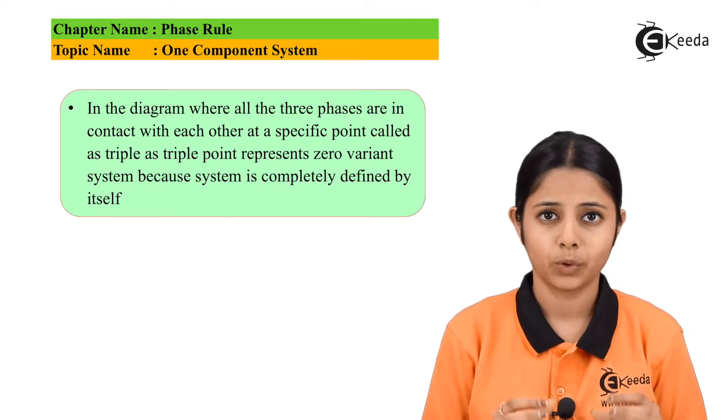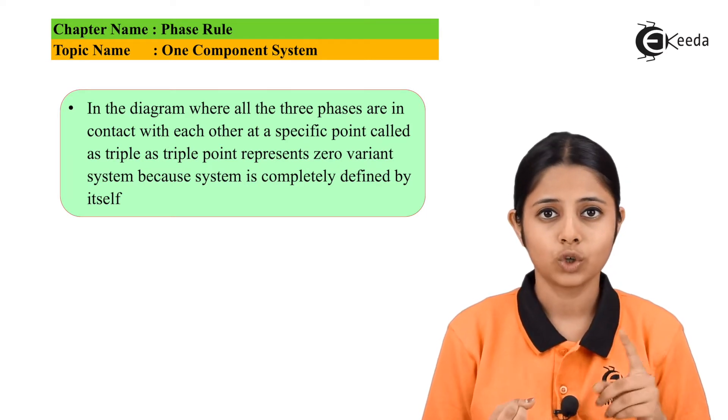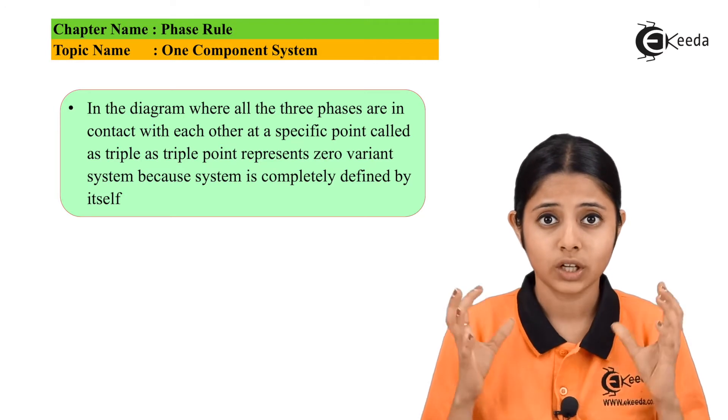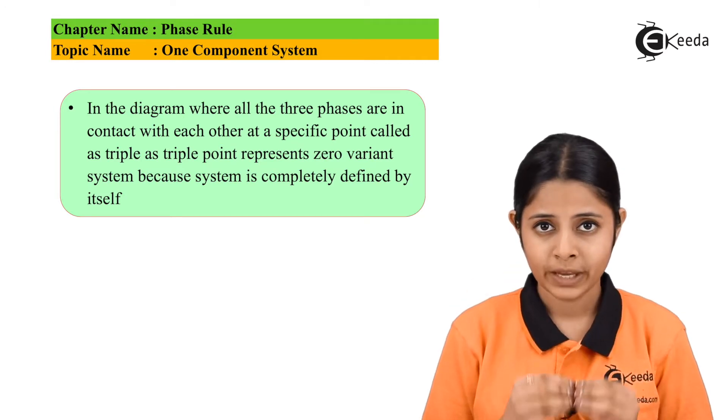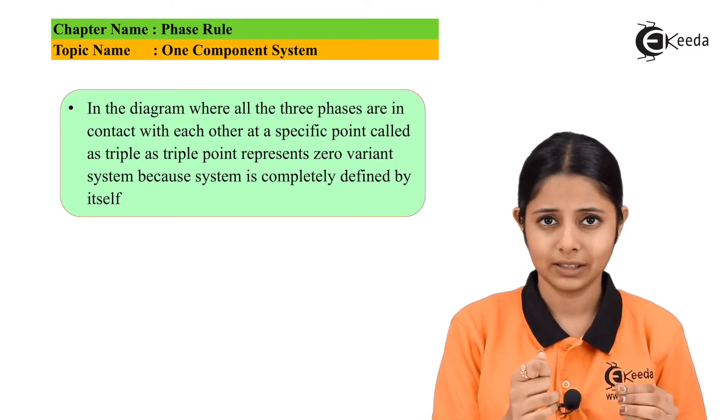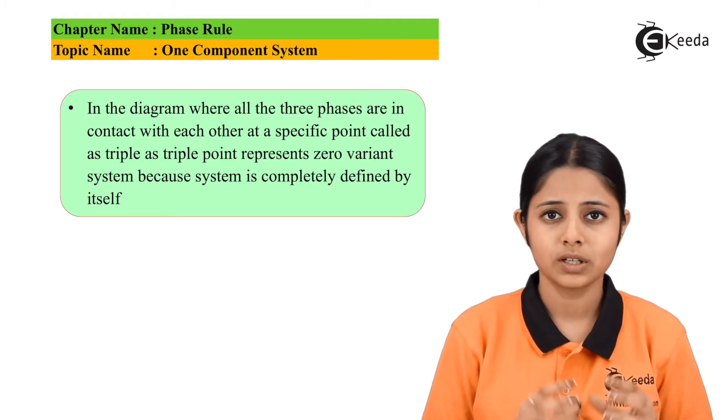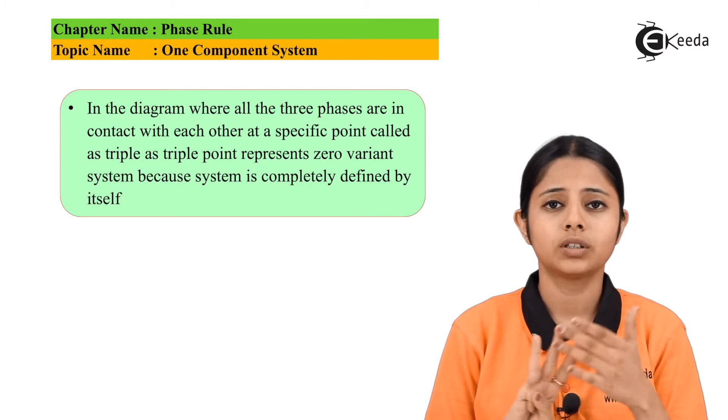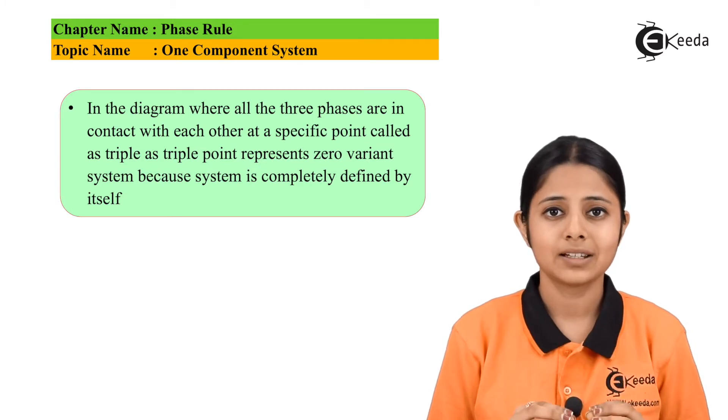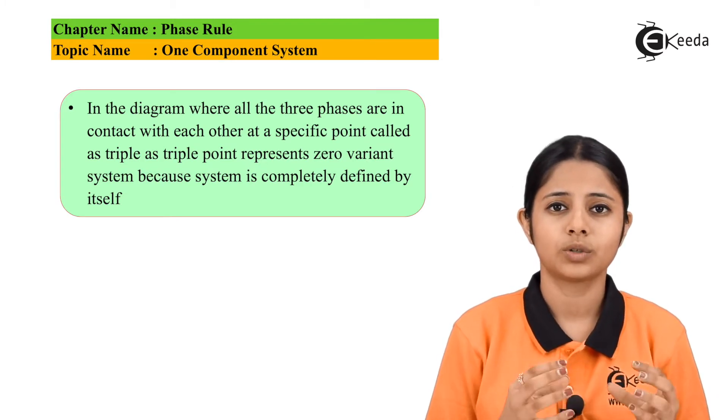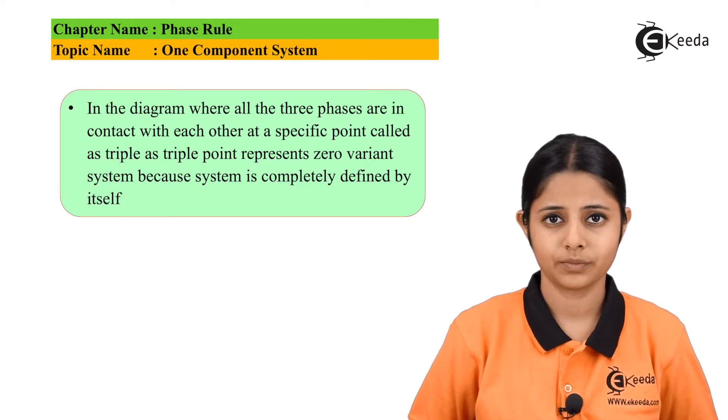What do we mean by zero variant point? Neither temperature, nor pressure, nor concentration, nothing should be changed at this point. If something changes slightly, then the entire triple point will be lost. The system will not stay in all the three phases together, and that is the reason why that particular point is known as a zero variant point of the system.